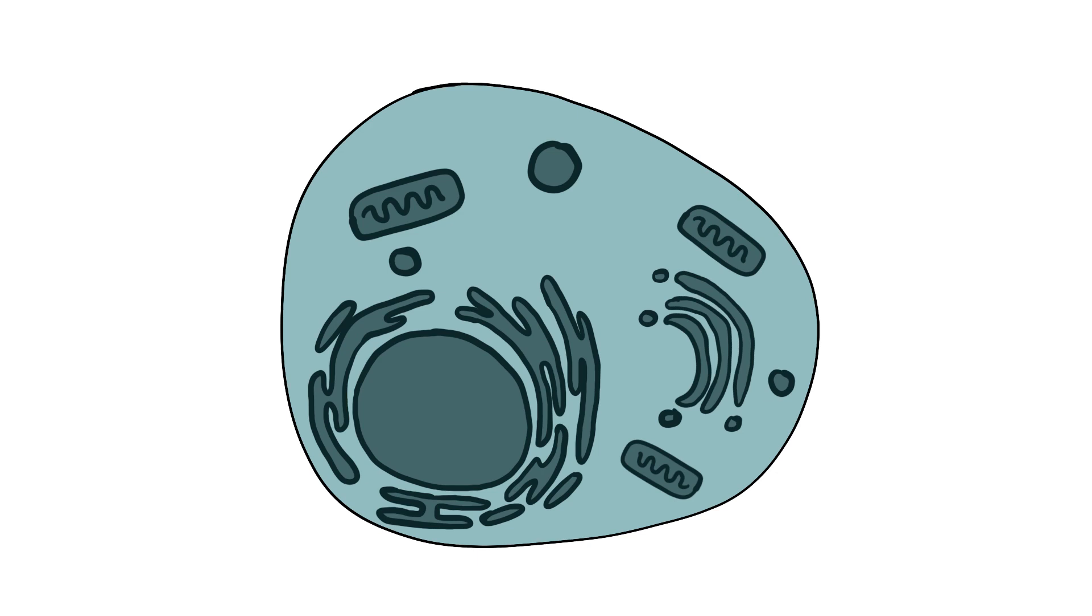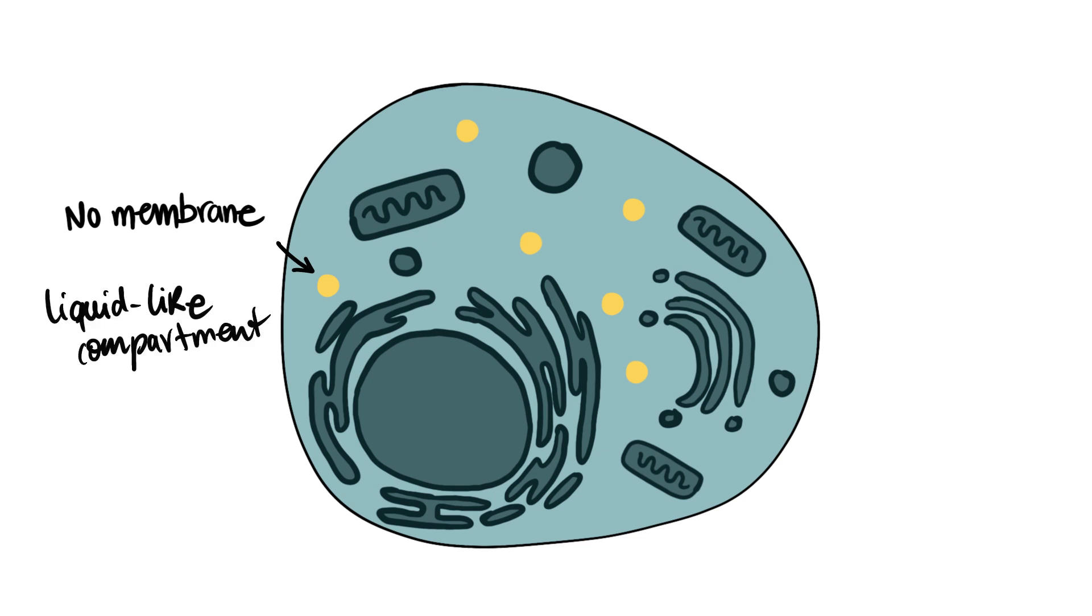Cells organize their interior into functional compartments. Research has shown that many of these compartments don't have an enclosing membrane. Instead, they are dense liquid droplets of biomolecules that coexist with the surrounding environment like oil drops in water.